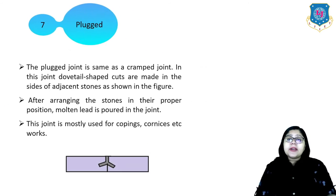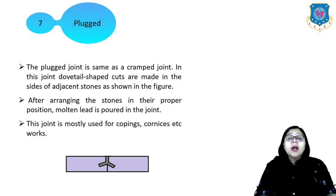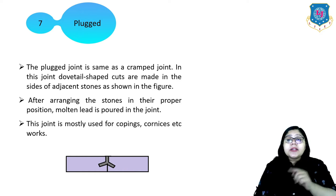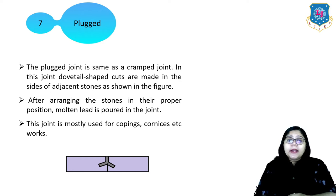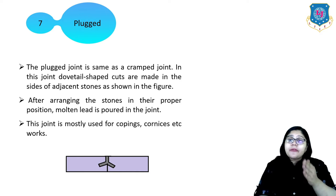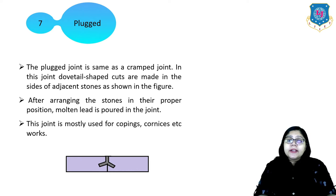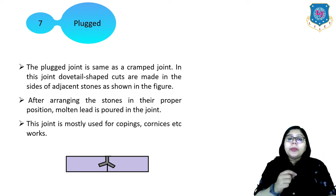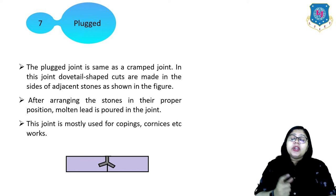The seventh type is the plugged joint, which is the same as the cramped joint. In this joint, dovetail-shaped cuts are made in the sides of adjacent stones. After arranging the stones in their proper position, molten lead is poured into the joint. This joint is mostly used for coping, cornices and other work.